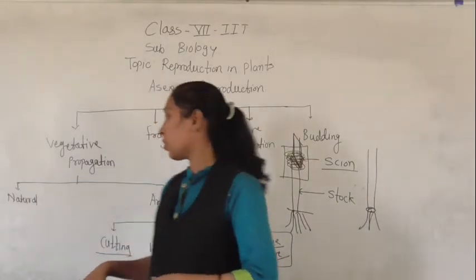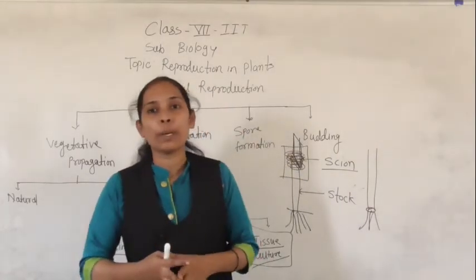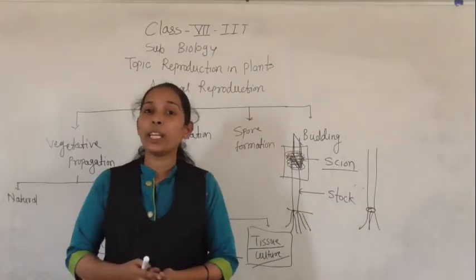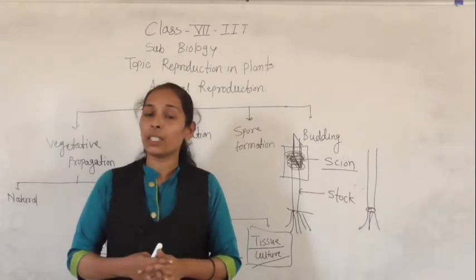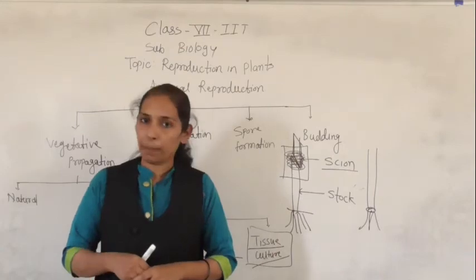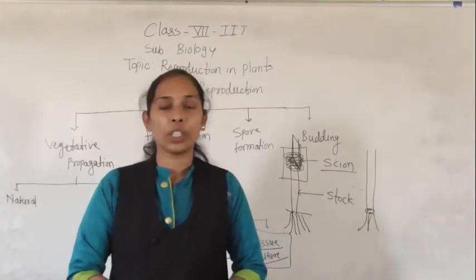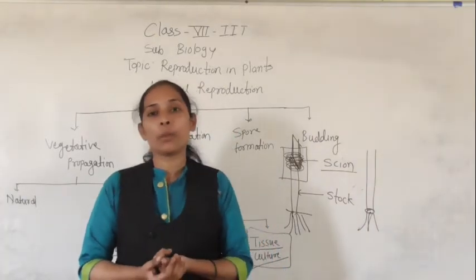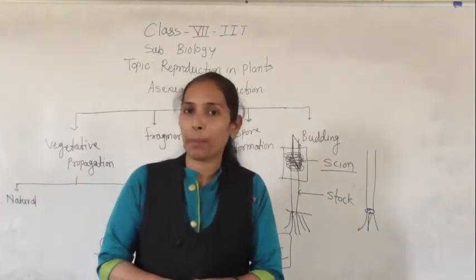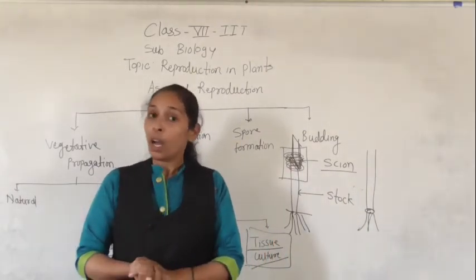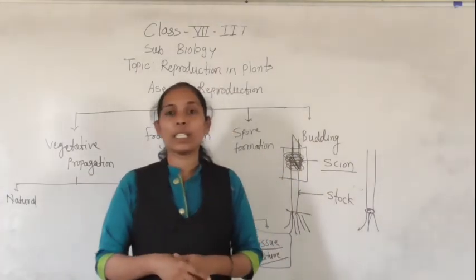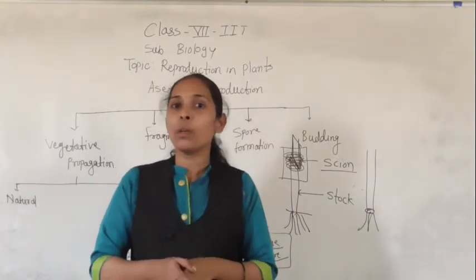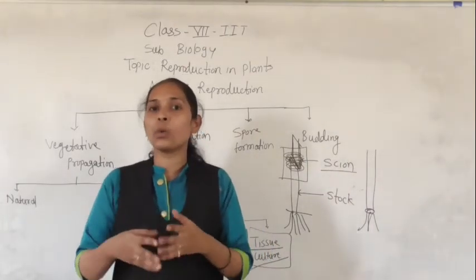Now we will discuss the advantages of vegetative propagation. Plants produced by vegetative propagation take less time to develop and grow within a very short period of time. It is a very quick method and multiplying of plants is also rapid, meaning within a short period of time we can grow a greater number of plants. Plants reproduced with the help of vegetative propagation get multiplied more rapidly and it is the easiest method to reproduce plants.